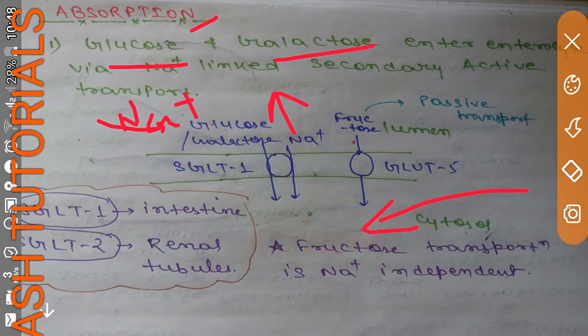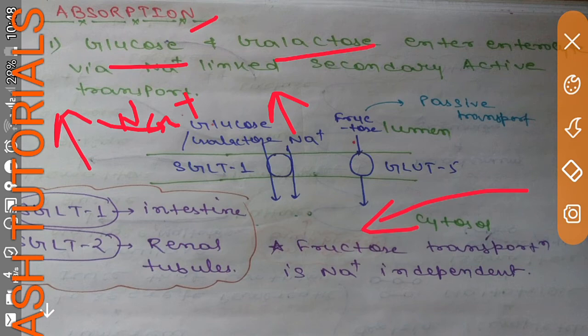A low concentration of sodium inhibits sugar influx. If sodium is present in greater amount at the luminal site, then glucose and galactose will be transported more into the cell. If its concentration is low, then glucose and galactose transport into the enterocyte will decrease.